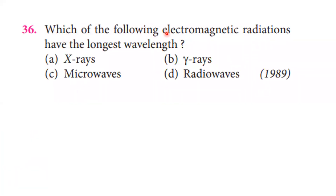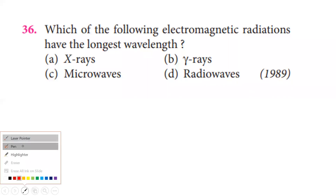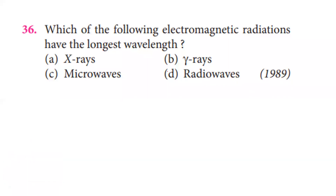Which of the following electromagnetic radiations has the longest wavelength? Going from gamma rays to radio waves in increasing order of wavelength, radio waves have the longest wavelength, of the order of meters. So the answer for this question is radio waves.